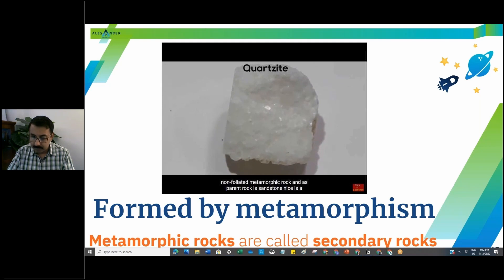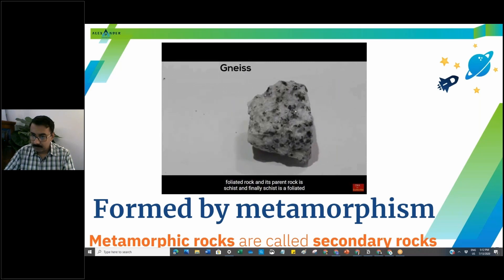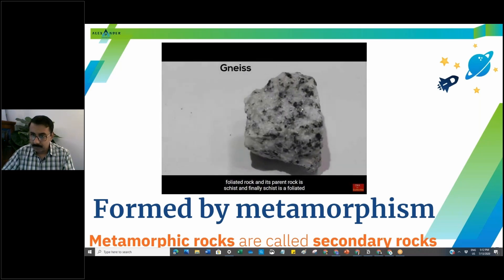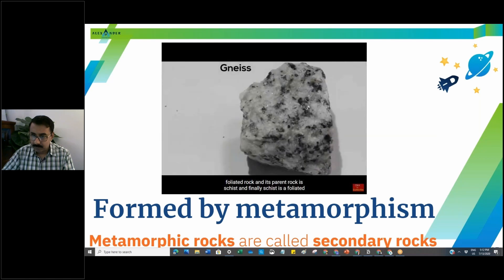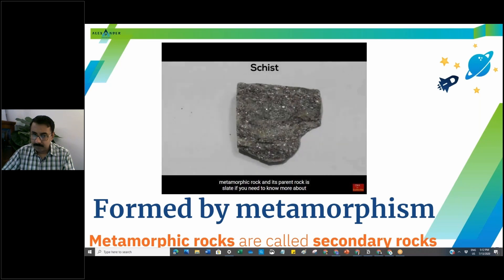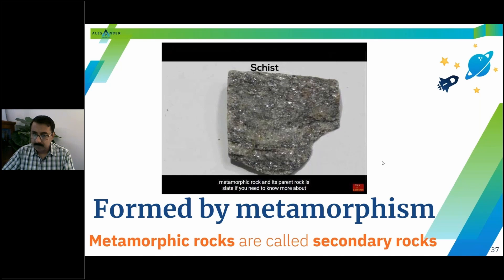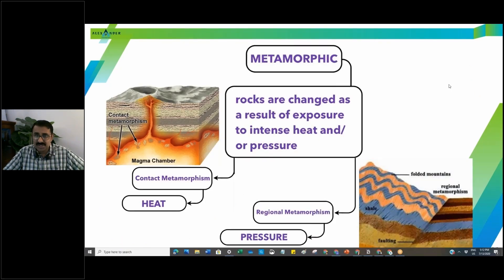Quartzite is a metamorphic rock whose parent rock is sandstone. Gneiss is a foliated rock whose parent rock is schist. And schist is a foliated metamorphic rock whose parent rock is slate. Rocks are changed as a result of exposure to intense heat and pressure.